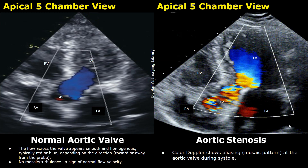These apical 5-chamber views show blood flow across a normal aortic valve and across a stenotic aortic valve with color Doppler applied. Normally, a single color — only blue here — is seen across the aortic valve, indicating normal smooth blood flow. In significant valve stenosis, color mixing is seen at the valve during systole, indicating disturbed flow. We know it is a stenotic valve and not a regurgitant one because the color mixing occurs during systole.